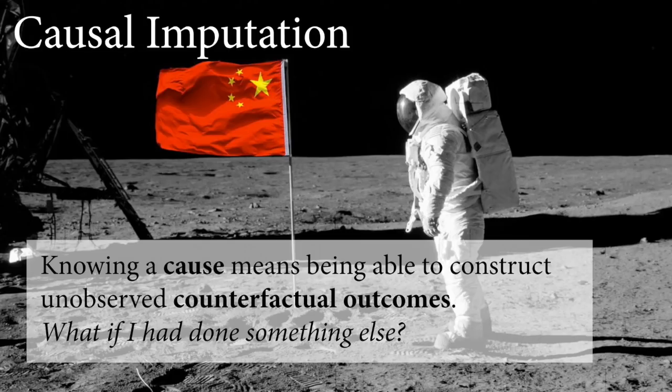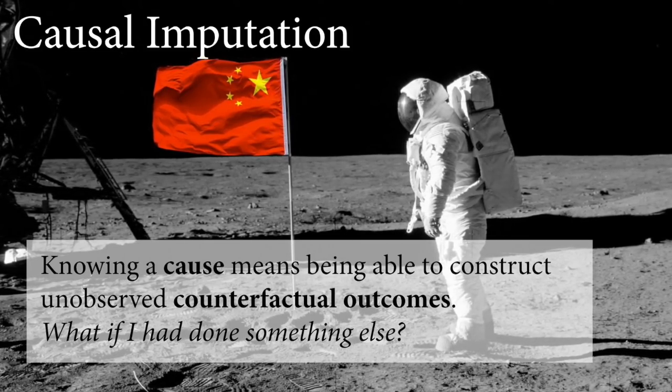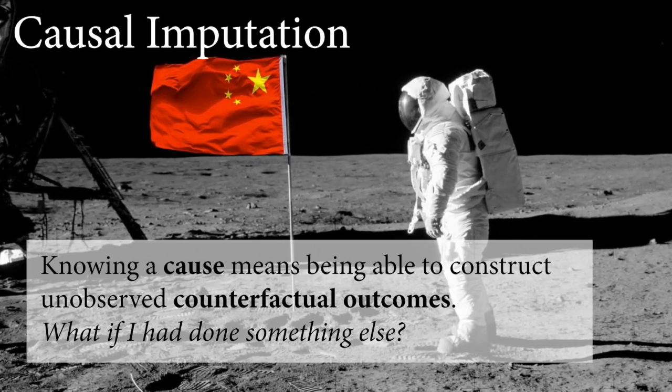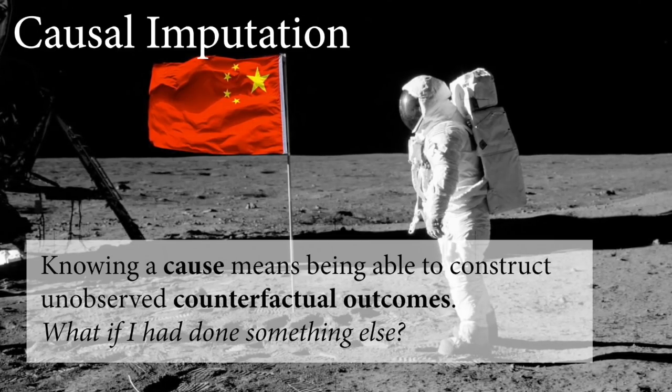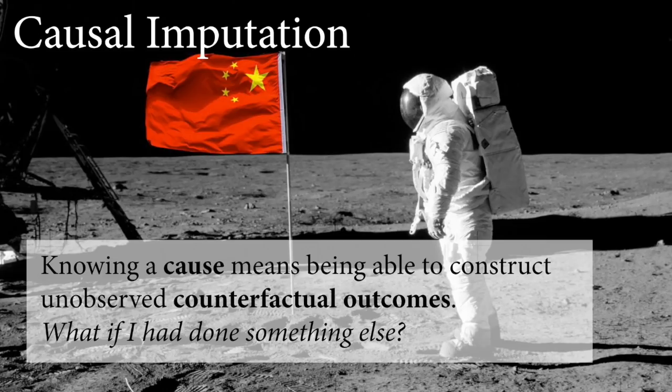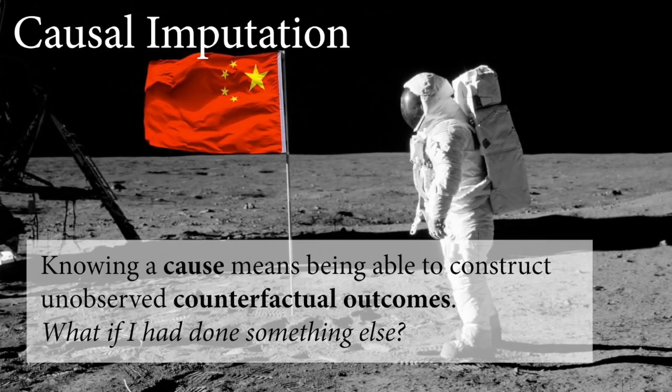The other way you can think about cause is through causal imputation, which are the counterfactual outcomes. Knowing a cause means being able to construct unobserved counterfactual things, things that did not happen, but if they had happened, you would be able to predict the consequences. These are alternative histories, like imagine if China had gotten to the moon before the United States. This is the part of causal inference that we often think of as explanation, although explanation is philosophically difficult, so I'm going to try to avoid it.